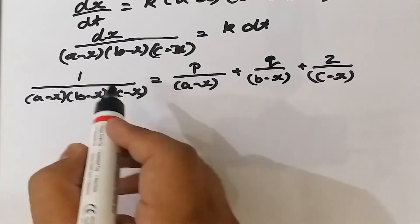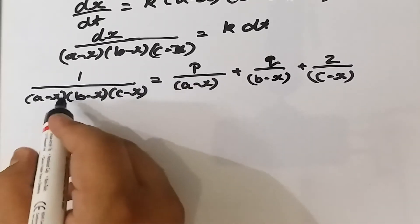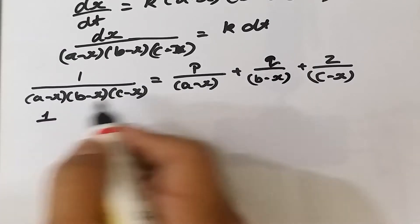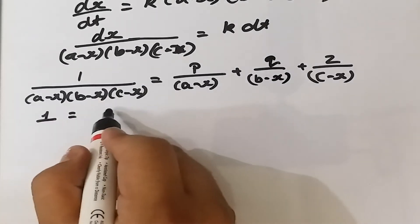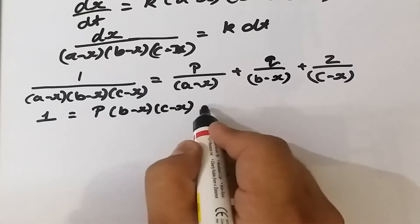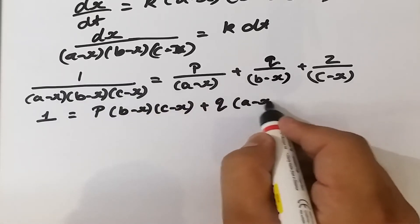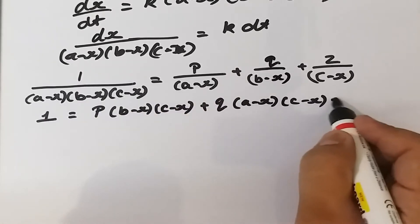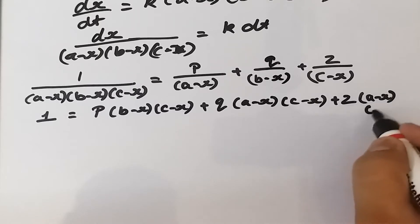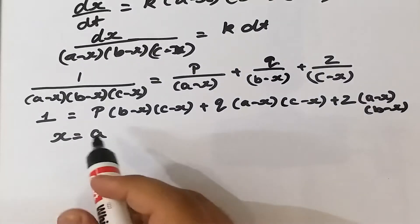We multiply both sides by (a minus x)(b minus x)(c minus x). The terms cancel, giving: 1 equals P·(b minus x)(c minus x) plus Q·(a minus x)(c minus x) plus Z·(a minus x)(b minus x).